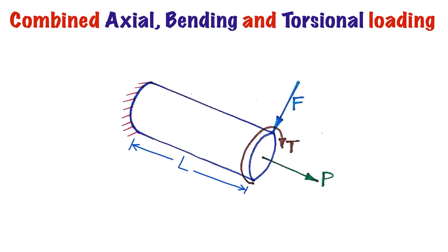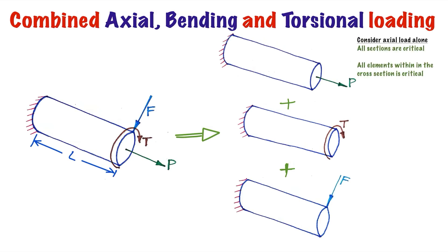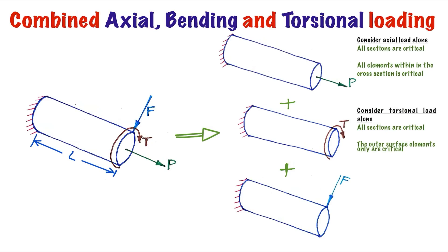For the combined axial, bending, and torsional loading case: axial load P is present, twisting moment T is present, and bending is created by a transverse force acting at the center at a distance L, creating a variable bending moment. Applying the principle of superposition, this combined loading is split into three individual cases: axial load acting alone, torsional moment acting alone, and variable bending moment acting alone. For axial load alone, all cross sections are critical and all elements are critical. For torsional load alone, all cross sections are critical and only outer surface elements are critical.